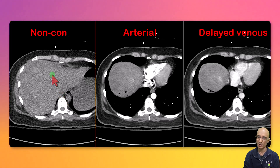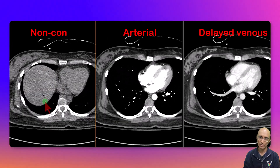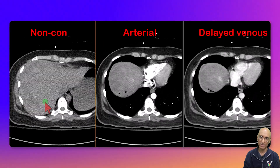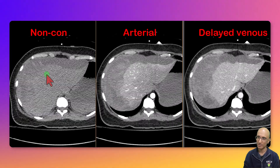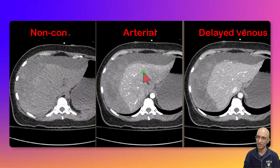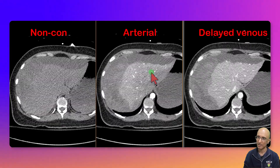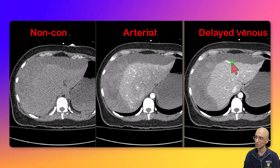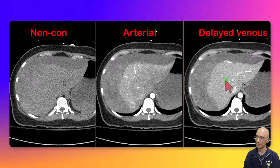Non-contrast, arterial, and delayed venous phases were performed. On the non-contrast images we can see a few locules of free gas in the subdiaphragmatic region. There is also a large perihepatic hematoma causing mass effect on the liver. On the arterial phase we can see a punctate focus of contrast extravasation along the surface of the liver, which on the delayed venous phase shows increased contrast pooling, consistent with active contrast extravasation from the surface of the liver.